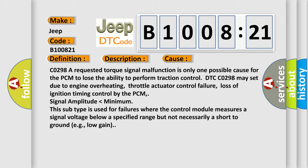DTC CO298 may set due to engine overheating, throttle actuator control failure, loss of ignition timing control by the PCM, or signal amplitude lower than minimum. This subtype is used for failures where the control module measures a signal voltage below a specified range but not necessarily a short to ground, for example, low gain.